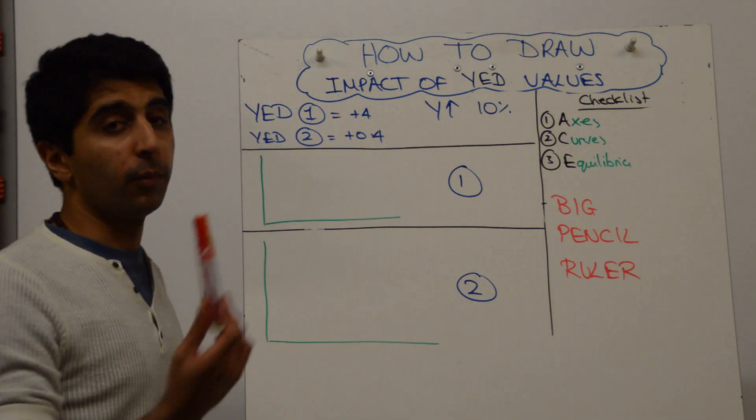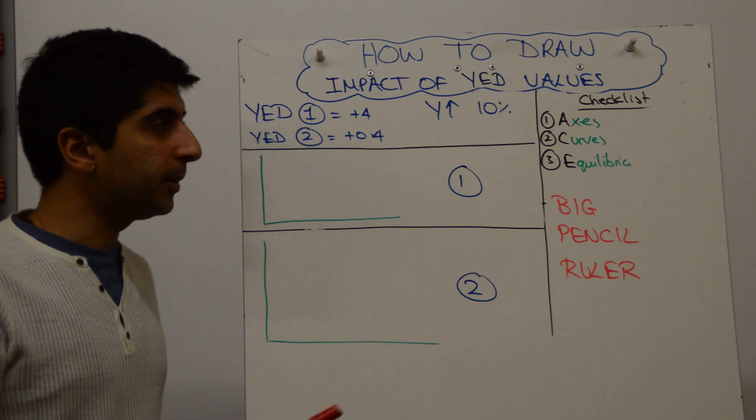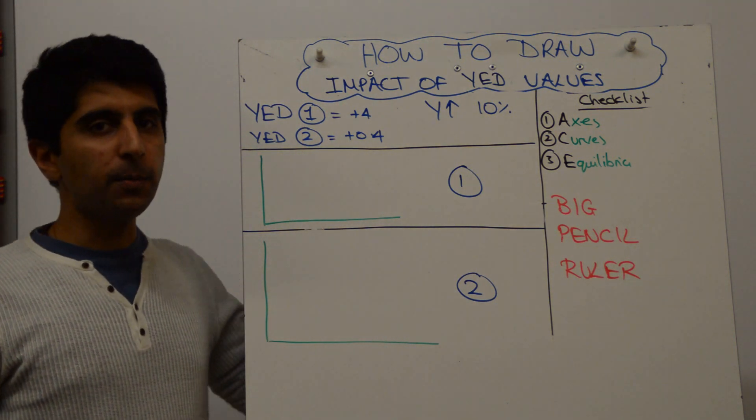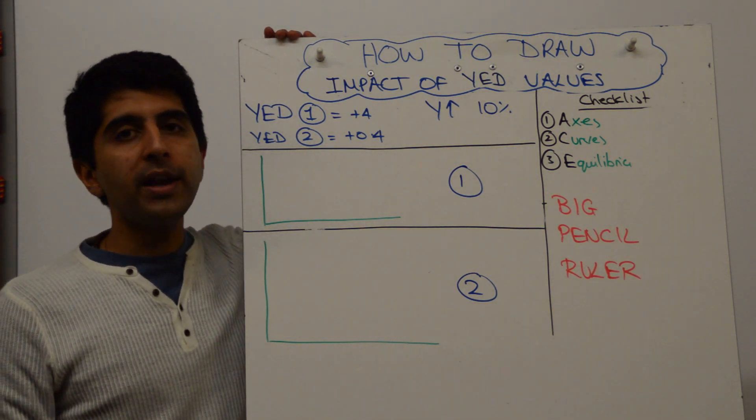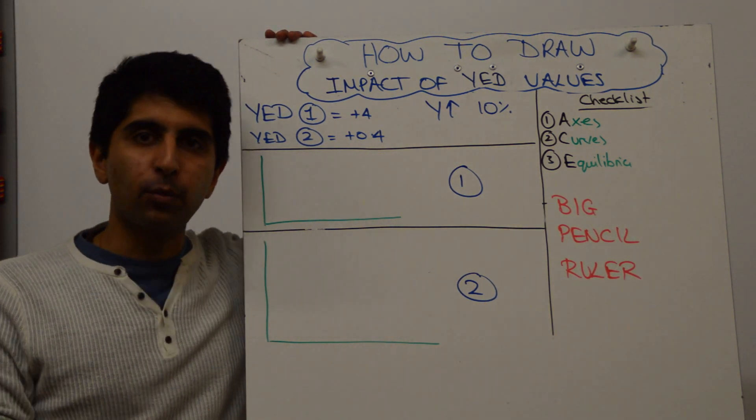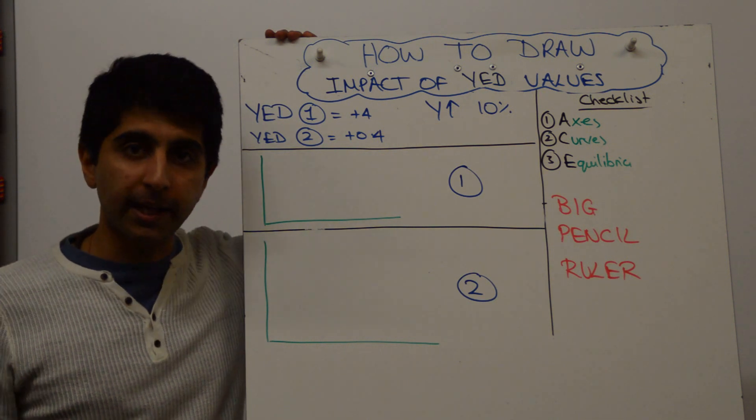Now we know that both goods are normal goods because they have a positive value, which means that if incomes are forecasted to rise, demand will shift to the right. What YED tells us is how much demand will shift when there is a change in income.